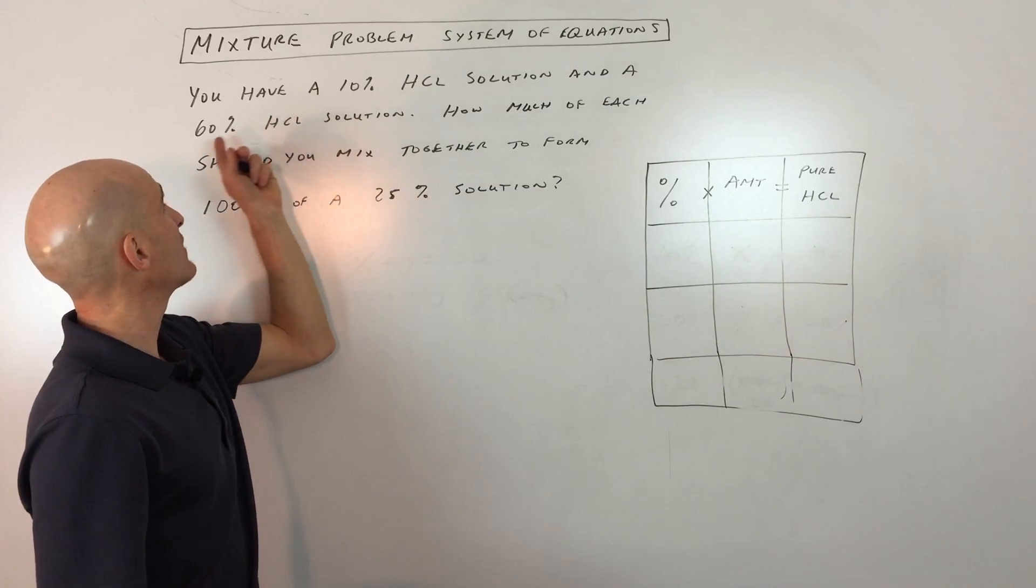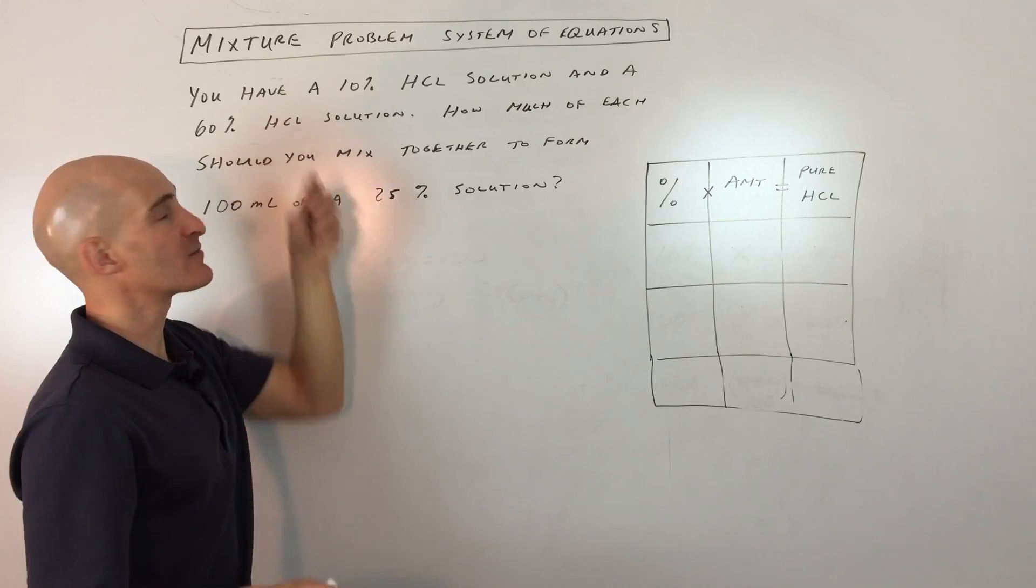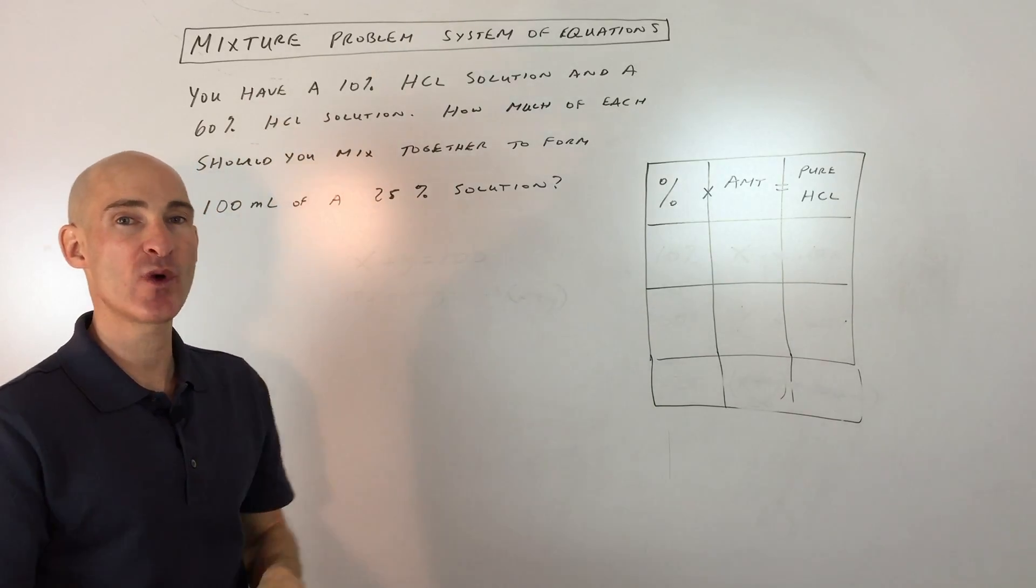Okay, so it should make sense. You've got a stronger solution and a weaker solution. You're trying to end up with something that's kind of in between. And you're trying to figure out how much of each you want to combine.